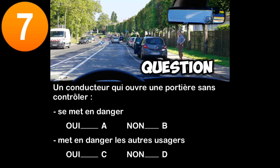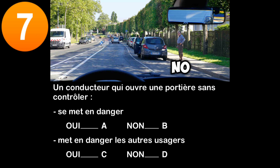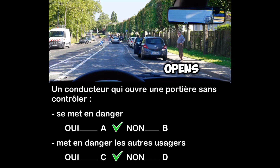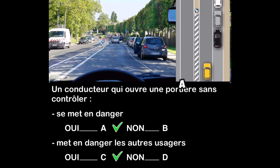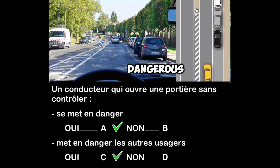Question seven: a driver who opens a door without checking — does he put himself in danger, yes or no? Does he endanger other users, yes or no? If he opens a door without checking, the driver puts himself in danger because he can be hit by a vehicle. He also endangers other users by causing, for example, an accident with a two-wheeled user. He is also likely to surprise another driver and cause them to perform a dangerous maneuver.